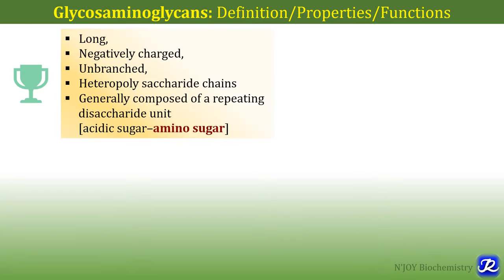Glycosaminoglycans are long and negatively charged. They are negatively charged due to the presence of sulfate groups and carboxylic groups. They are linear, that is unbranched, heteropolysaccharide chains generally composed of a repeating disaccharide unit — that is an acidic sugar, either glucuronic acid or iduronic acid, and an amino sugar, either glucosamine or galactosamine.